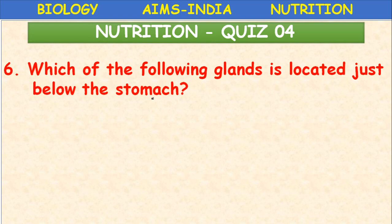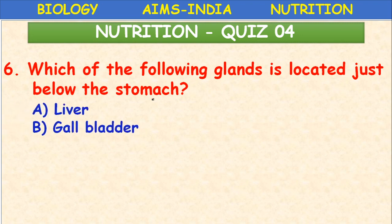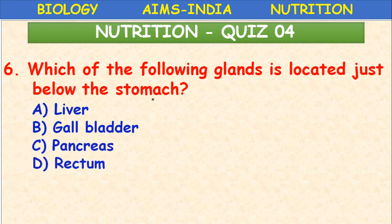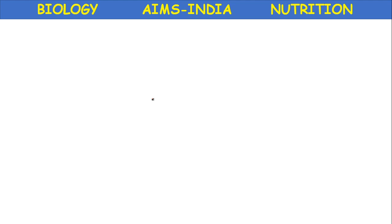Which gland is located just below the stomach? The answer is the pancreas — option C. The pancreas is a pale yellow-colored mixed gland located below the stomach.